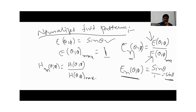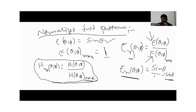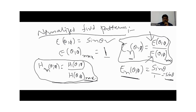This is the formula if the field pattern is expressed in terms of magnetic field, and this is the formula if the field pattern is expressed in terms of electric field. These are the formulas for field patterns.